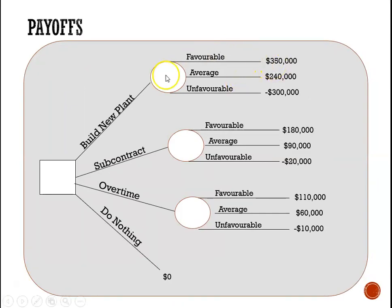Now we add the payoffs. If we build a new plant and conditions are favorable, we make a profit of $350,000. Average conditions yield a profit of $240,000, and unfavorable conditions result in a loss of $300,000. If we subcontract and conditions are favorable, we make a profit of $180,000. Average conditions yield $90,000, and unfavorable conditions result in a loss of $20,000. For overtime: favorable gives a profit of $110,000, average gives $60,000, and unfavorable gives a loss of $10,000. If we do nothing, the payoff is zero.